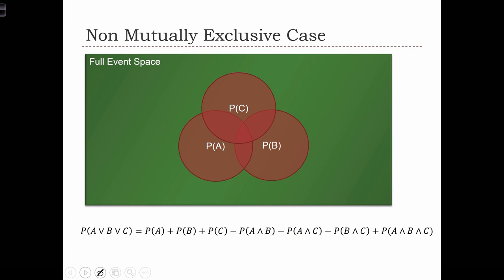Let's look at the example here with three cases. We've got three events, event A, B, and C, and none of the events are mutually exclusive.